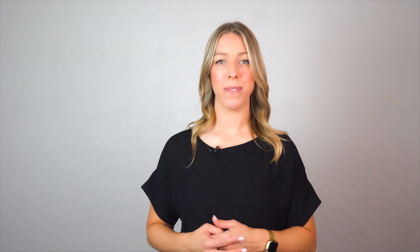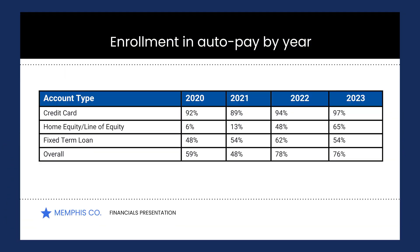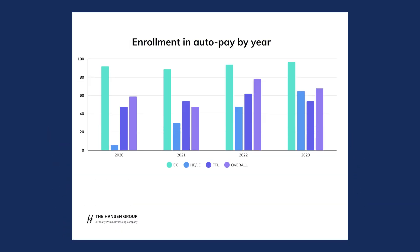Now let's get back to understanding tables and charts. Here we're showing a table. This is from the financial services industry and you can see just by looking at the table that we're looking at enrollment in autopay over time. The same information can be presented in a graph like this.